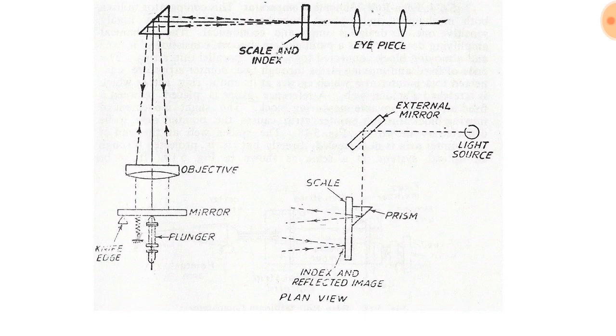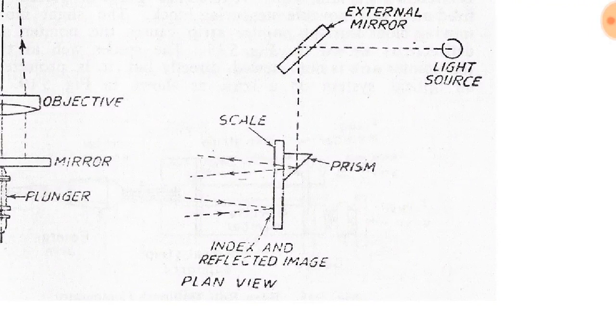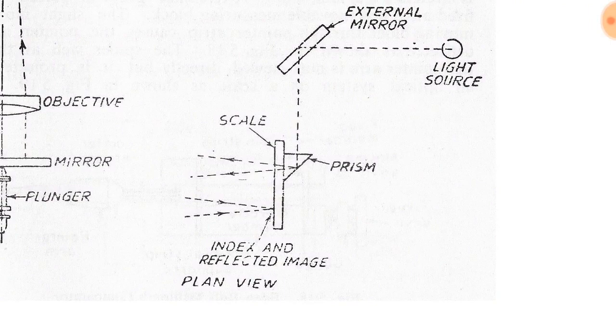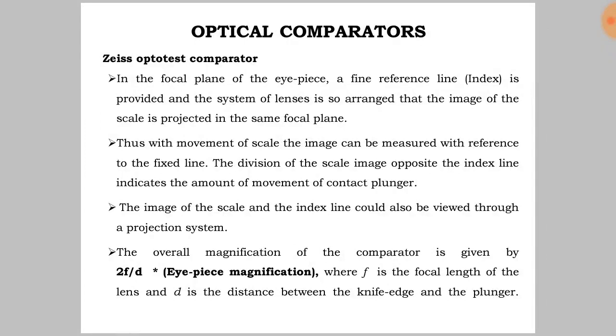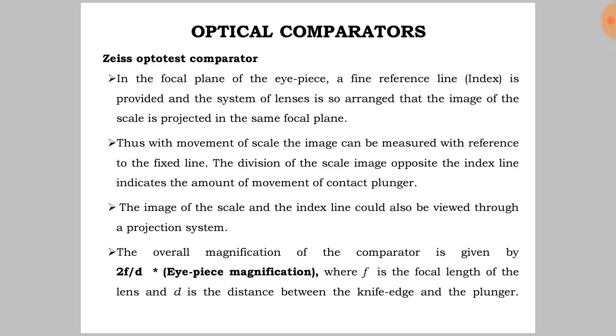The image of the scale and index line can also be viewed through a projection system. The overall magnification of the comparator is given by 2f/d times eyepiece magnification, where f is the focal length of the lens and d is the distance between knife edge and plunger. This is a short video about Zeiss optical comparator and Zeiss optotest comparator.